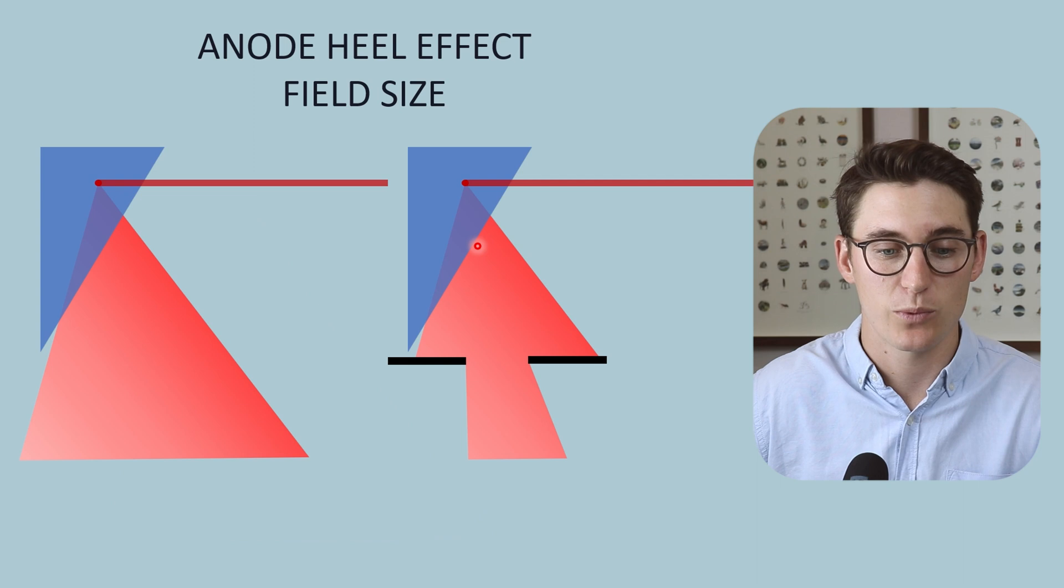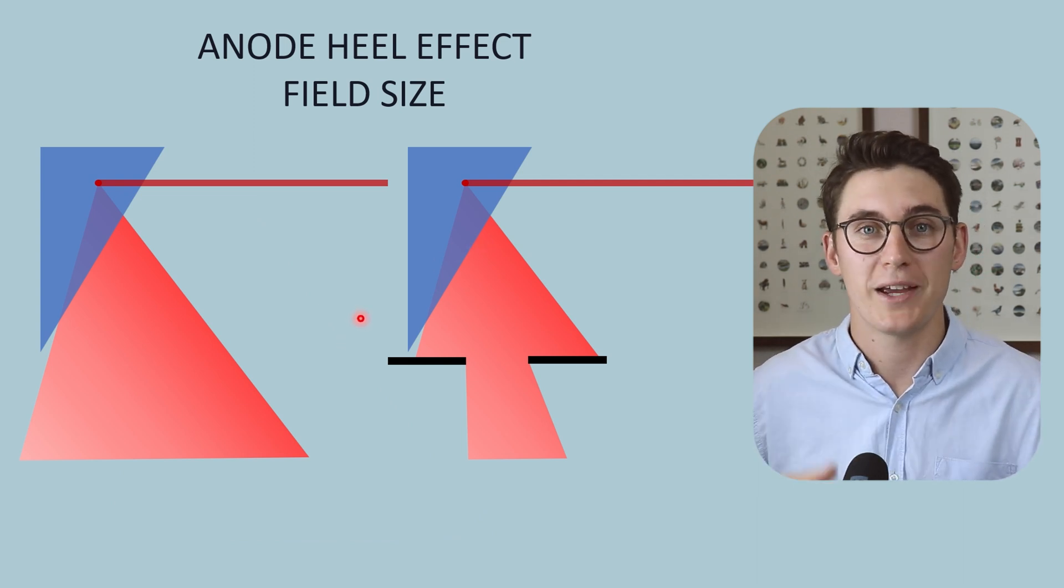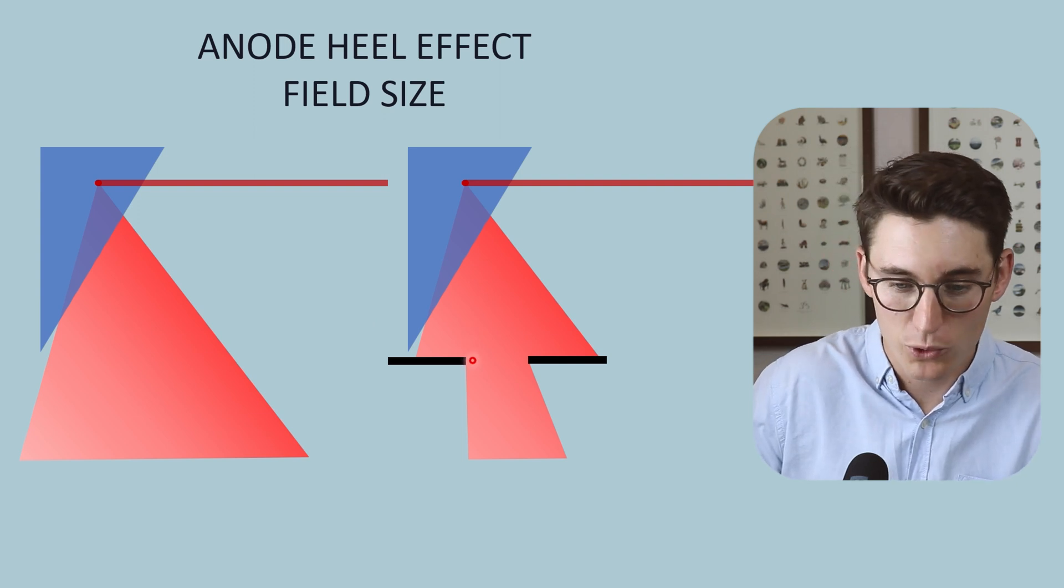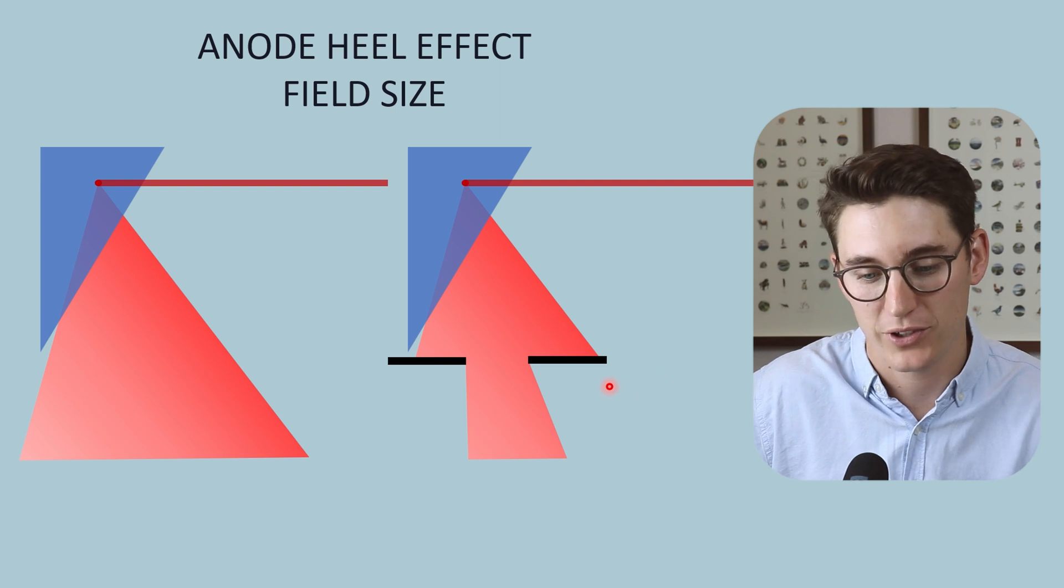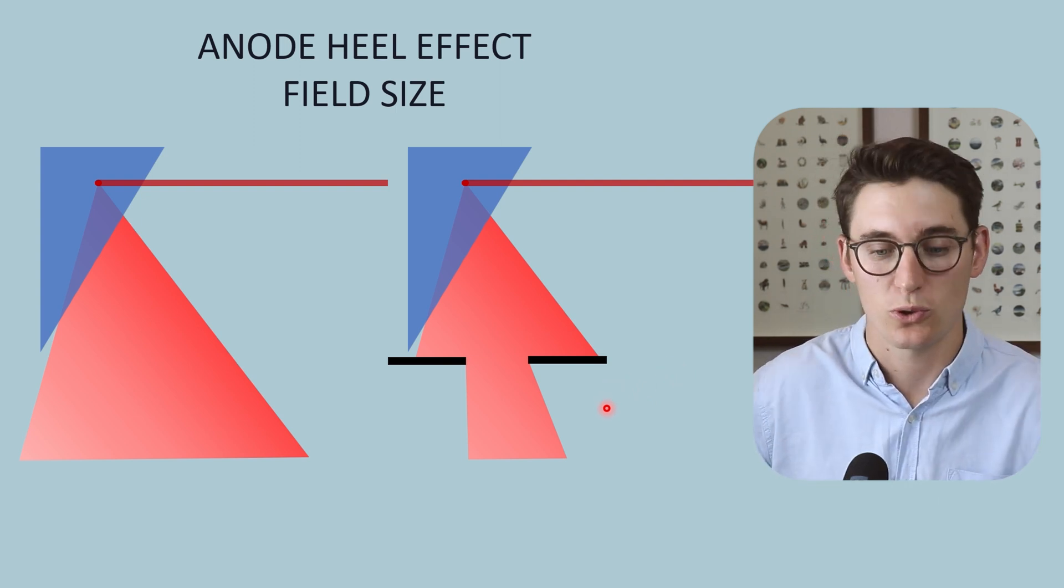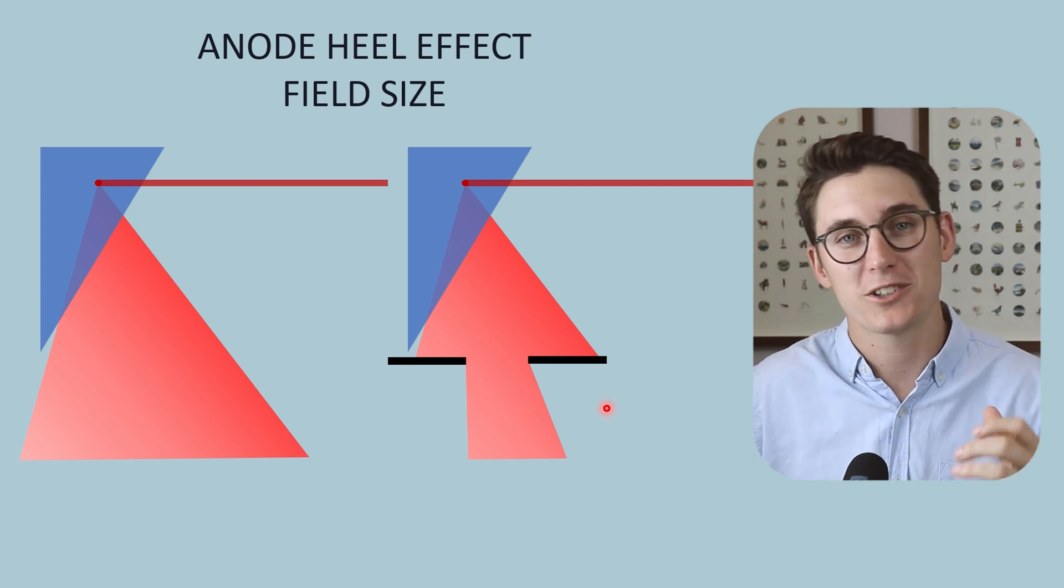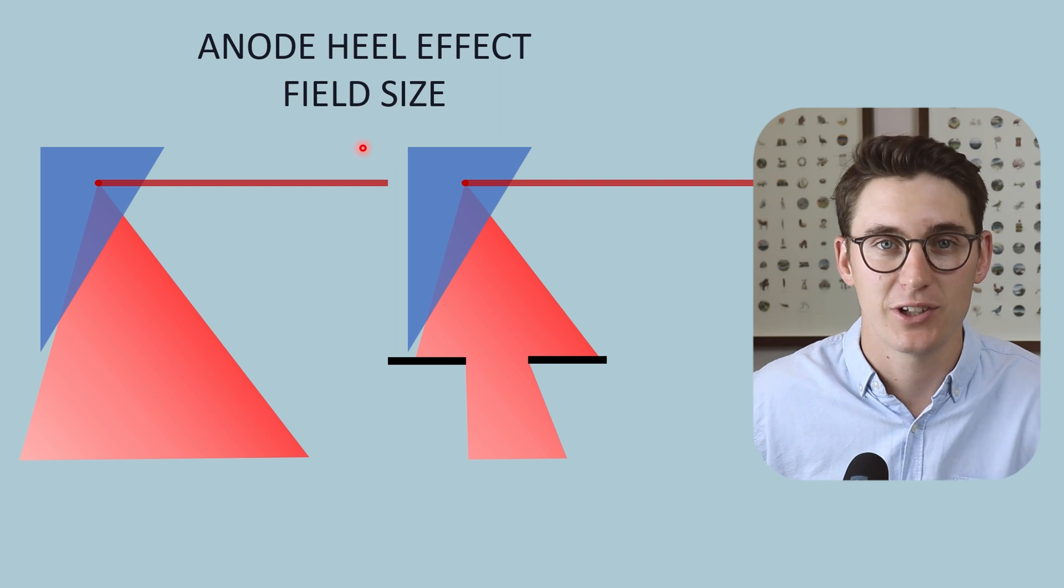Now the last thing that we can do is change our field size. We can do this by a process called collimation where we remove x-rays on the anode and cathode size of our field. Now this process, collimation, we are going to go through in two talks time and we'll see there are multiple benefits to collimation, one of which is reducing the anode heel effect.